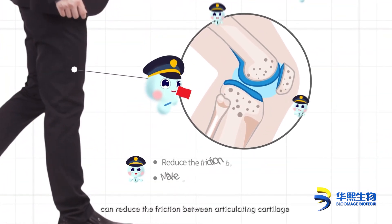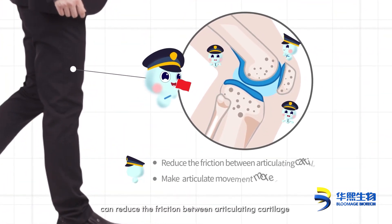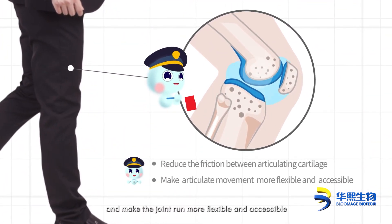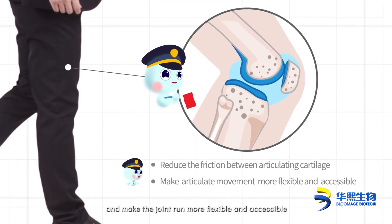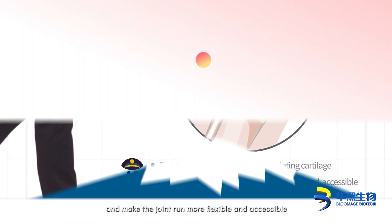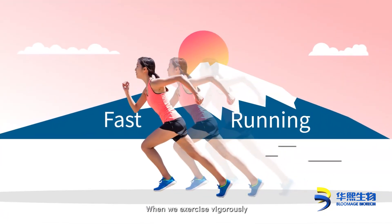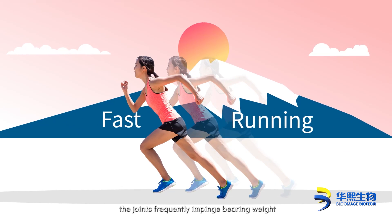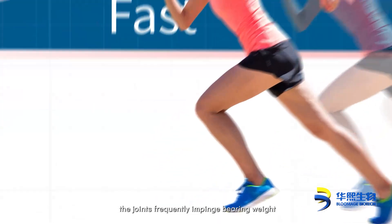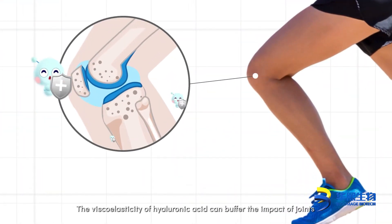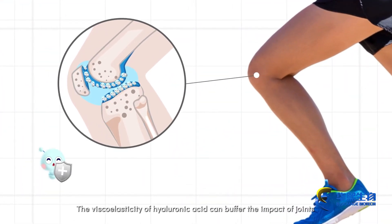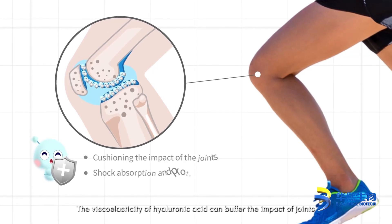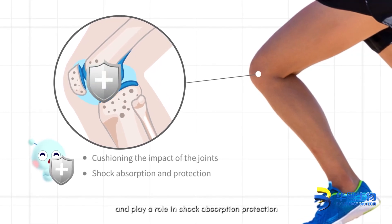When we move at a slow speed, the lubricity of hyaluronic acid can reduce the friction between articulating cartilage and make the joint run more flexible and accessible. When we exercise vigorously, the joints frequently impinge and bear weight — the viscoelasticity of hyaluronic acid can buffer the impact on joints.